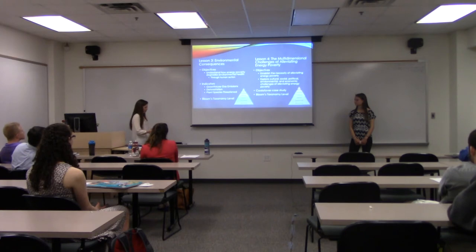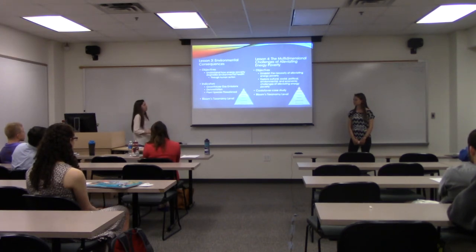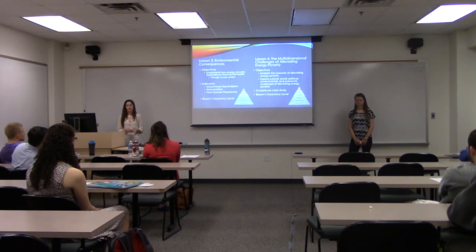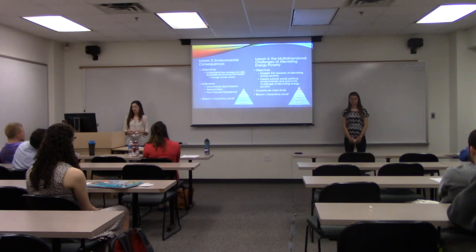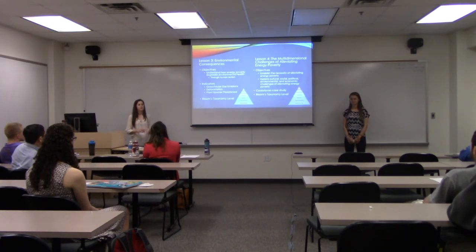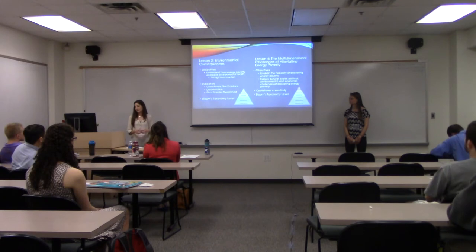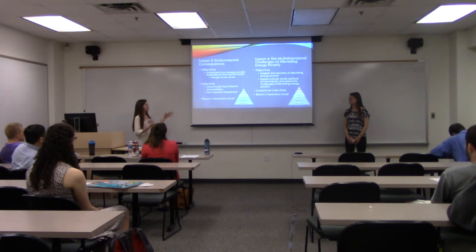Lesson three is the environmental consequences. The objectives are to understand how energy poverty degrades environmental health, mostly through human action. The indicators used are greenhouse gas emissions, deforestation, and plant species threatened, which alludes to biodiversity loss. The Bloom's Taxonomy level is the same as lesson two — Understanding through Analyzing — moving away from recall and analyzing what really happens when you don't have energy access.